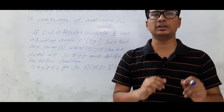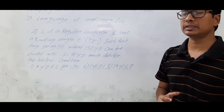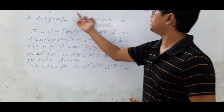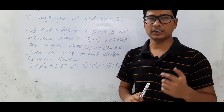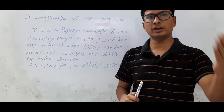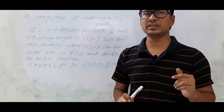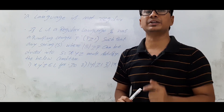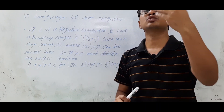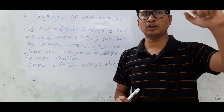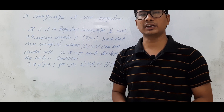Let me explain the pumping lemma. Pumping lemma is used to prove that a language is not a regular language. If you take a non-regular language, it will prove that it is not a regular language. So it is used as a negativity test — it will never prove that a language is regular, it will always prove that it is not a regular language.